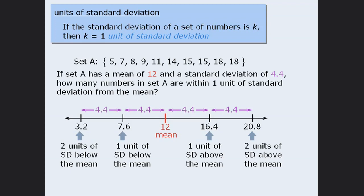The question asks us to determine which numbers in the set are within 1 unit of standard deviation from the mean. So we are looking for numbers in this range — from 1 unit of standard deviation below the mean to 1 unit of standard deviation above the mean. In other words, we need to determine how many numbers in this set are between 7.6 and 16.4. As we can see, there are 6 numbers between 7.6 and 16.4.